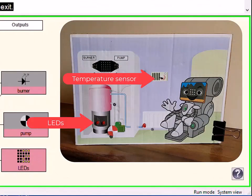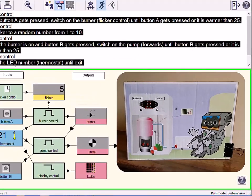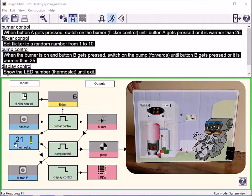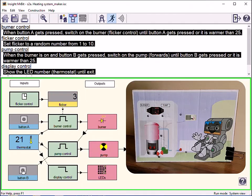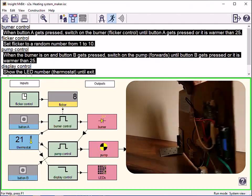Finally, an example of a two-dimensional model you can build for yourself. This simulates a heating system with a temperature sensor, some LEDs and a motor. The temperature shows on the microbit and the buttons control the burner LEDs and pump motor.